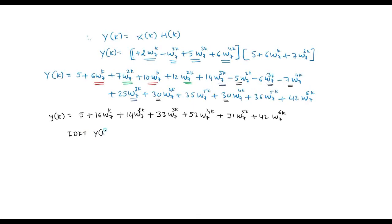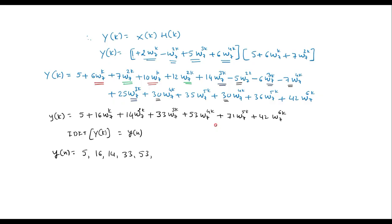Taking the IDFT of Y(k) gives Y(n). We can directly write Y(n) from the coefficients: for n=0 it is 5, n=1 it is 16, n=2 it is 14, n=3 it is 33, n=4 it is 53, n=5 it is 71, n=6 it is 42. So Y(n) = {5, 16, 14, 33, 53, 71, 42}.